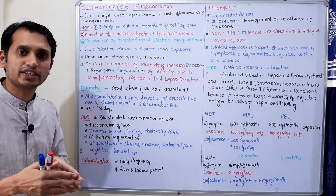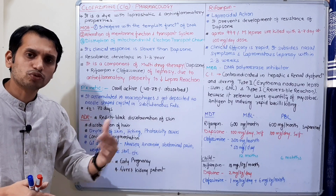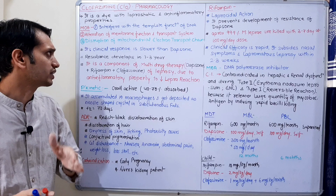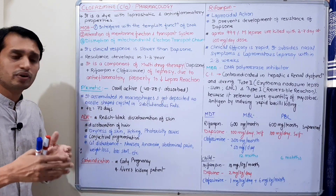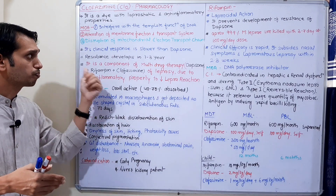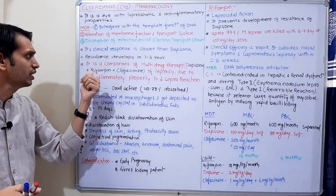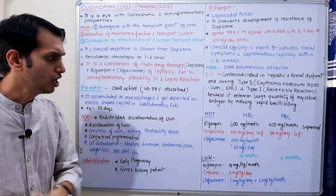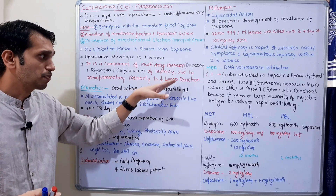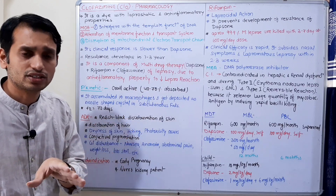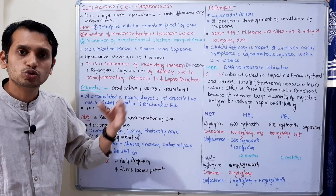Clofazimine has three modes of action. It is not used as monotherapy because its clinical efficacy is very slow compared to Dapsone, and resistance chances increase with monotherapy — so it is always included in multi-drug therapy. Its clinical response is slower than Dapsone, and resistance develops within one to three years with monotherapy. In multi-drug therapy for leprosy, three drugs are used: Dapsone, Rifampicin, and Clofazimine. Due to its anti-inflammatory properties, Clofazimine is used in multi-drug therapy to prevent leprosal inflammatory reactions that occur during leprosy.